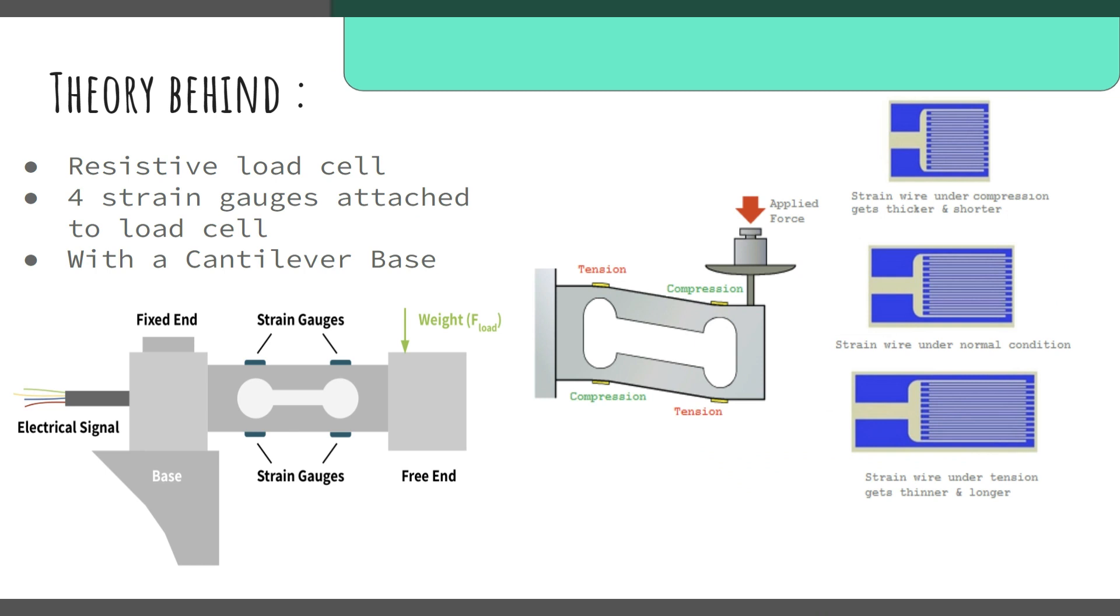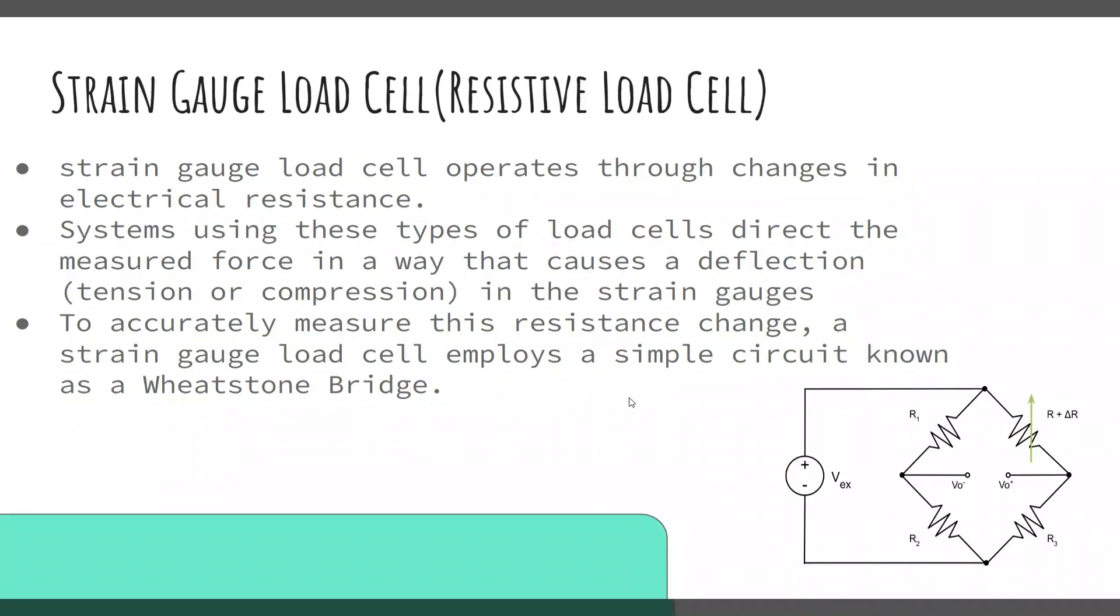Shortly we can say that strain gauge load cells operate through changes in electrical resistance. These kind of systems are used to measure the force directly through compression and tensions created. To measure accurately the force being applied and the changes happening in the resistance...